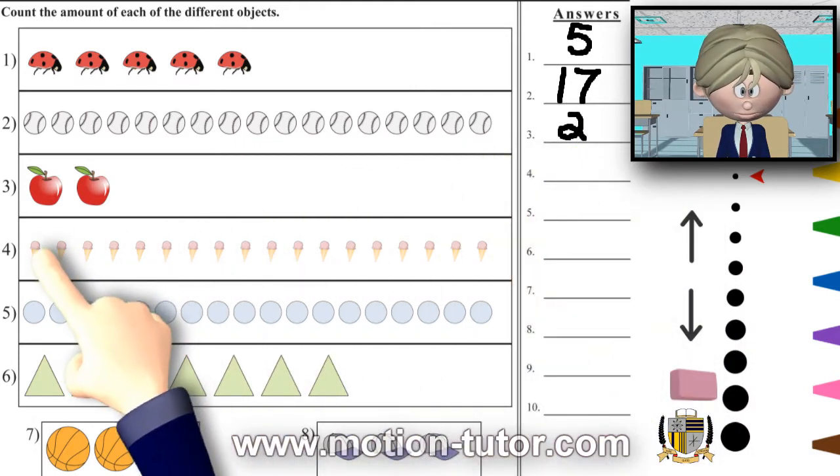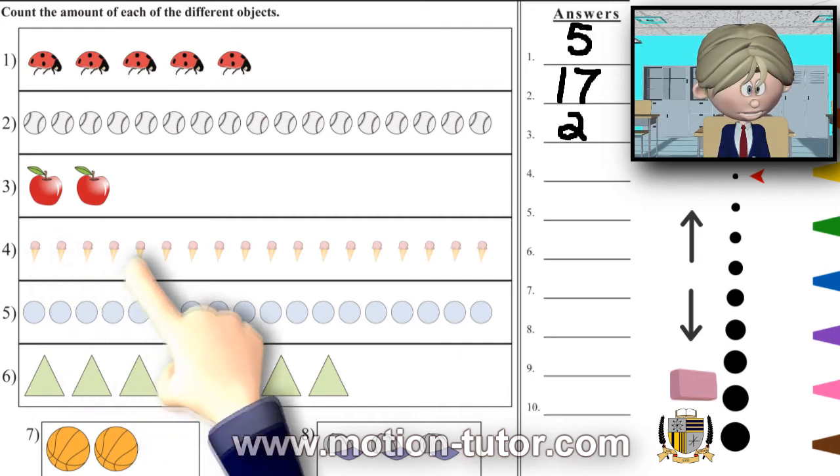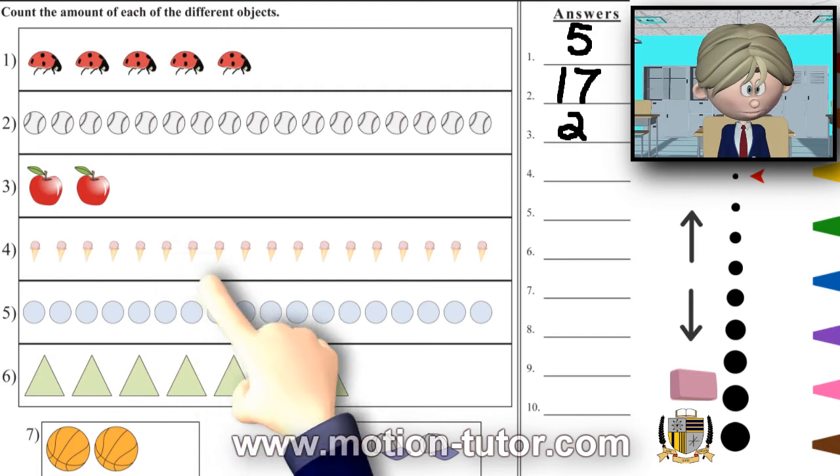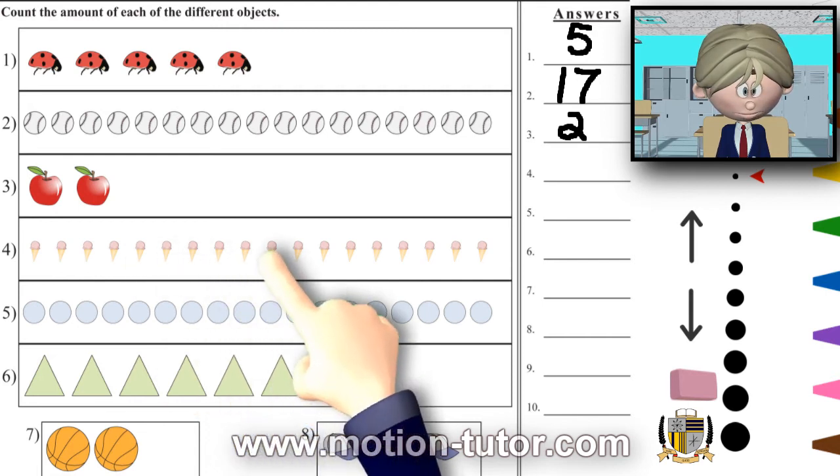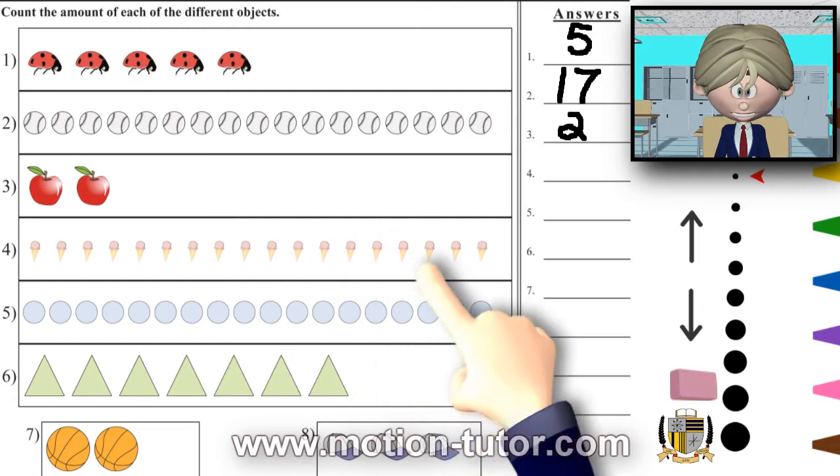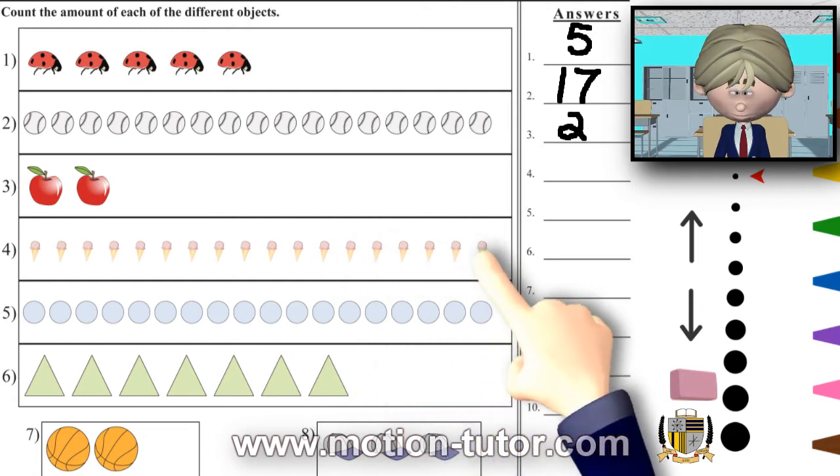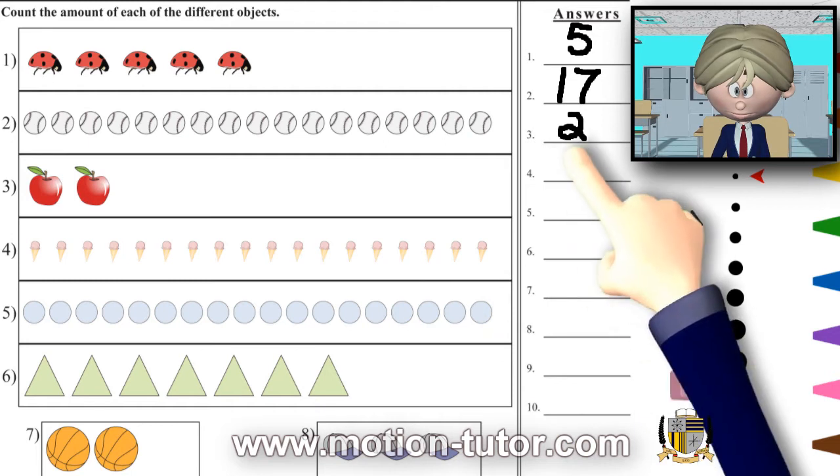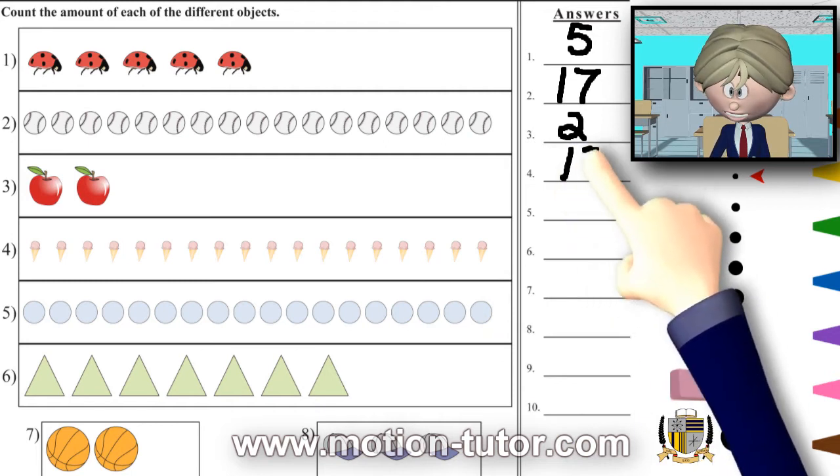Now for the ice creams: 1, 2, 3, 4, 5, 6, 7, 8, 9, 10, 11, 12, 13, 14, 15, 16, 17, 18. So 18 ice creams.